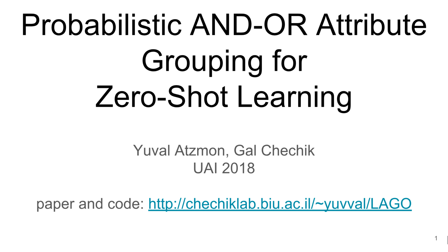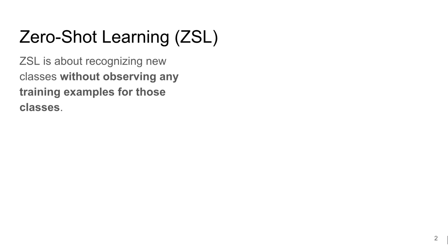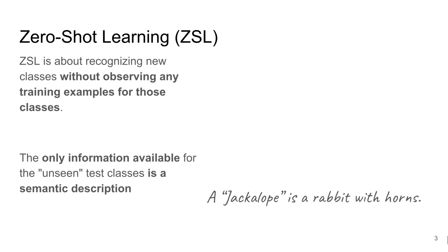Hi, I'm Yuval Atzmon. I will tell you about our Zero-Shot Learning paper. Zero-Shot Learning is about recognizing new classes without observing any training examples for those classes. The only information available for the unseen test classes is a semantic description.